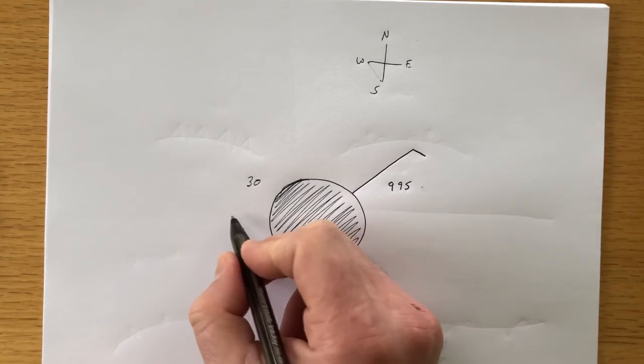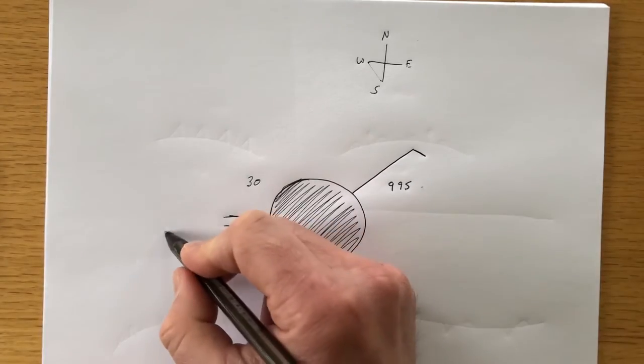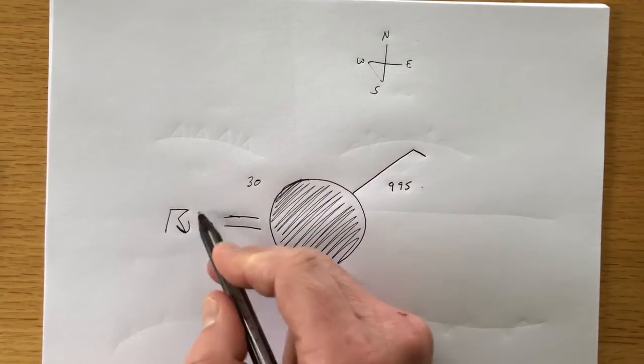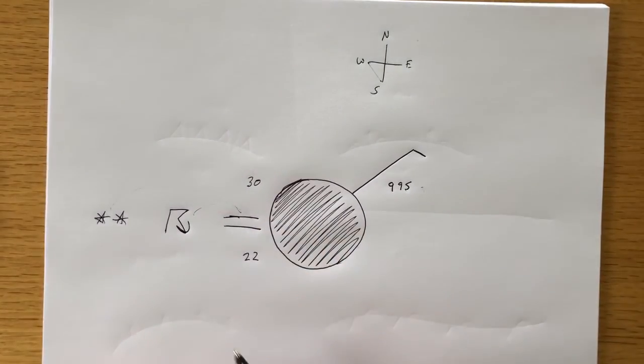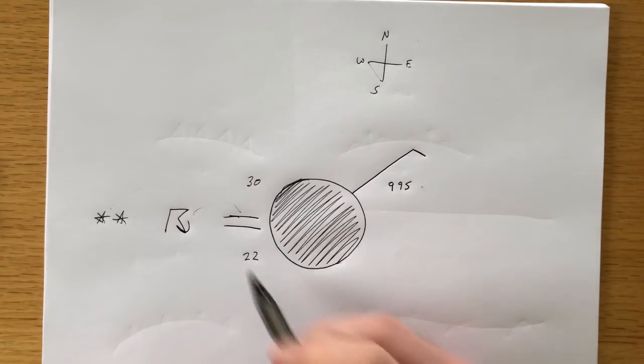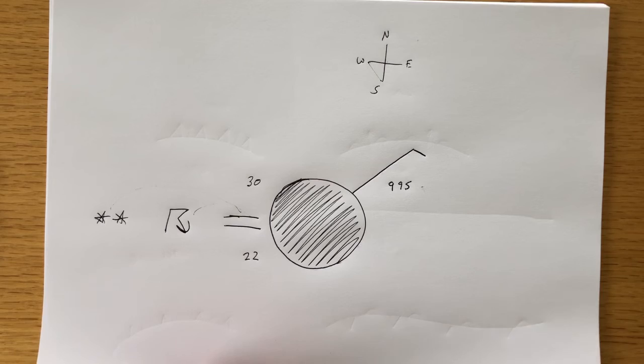If it was foggy, you'd put the symbol for fog right over here. Or if it was thunderstorming, you'd put the symbol for thunderstorms right there. If it was snowing, you'd put the symbol for snow right there. You get it? That is how you draw a surface station model to represent the weather in an area at any given time.